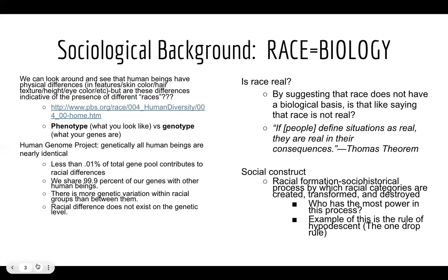A good example of how these categories reflect who is in power versus who is not: the book touches on the rule of hypo descent, later categorized with the more common term, the one drop rule. This was the idea that any known amount of minority blood or ancestry made you a minority — which flies in the face of what we might think about ancestry, lineage, or genetics.